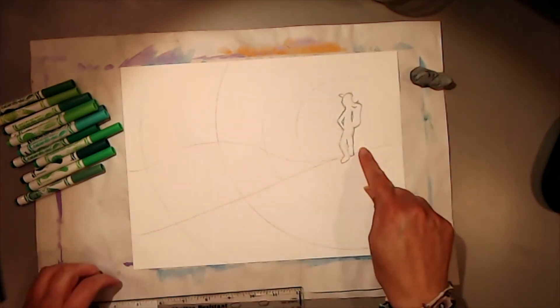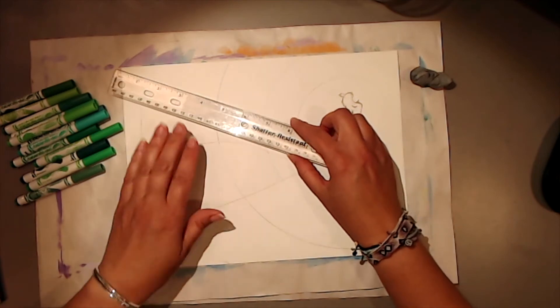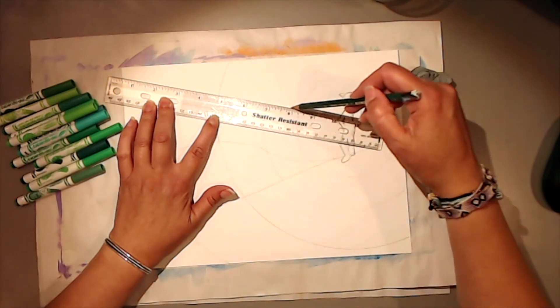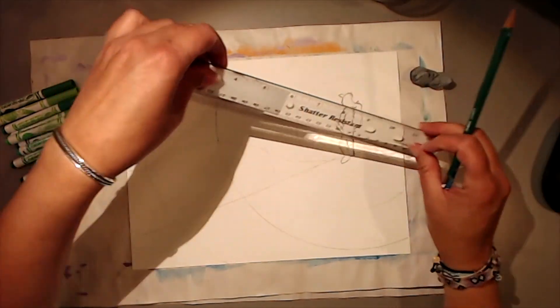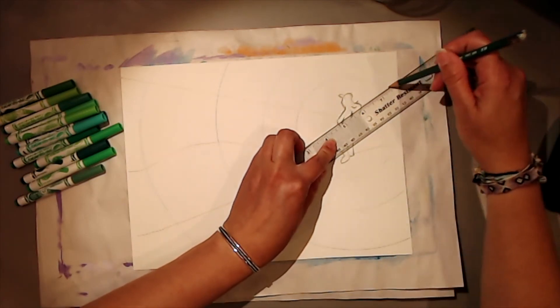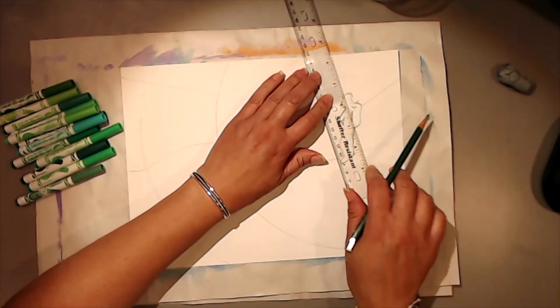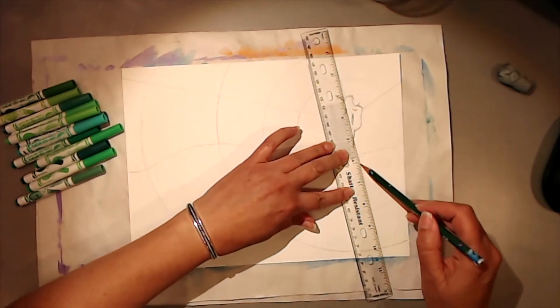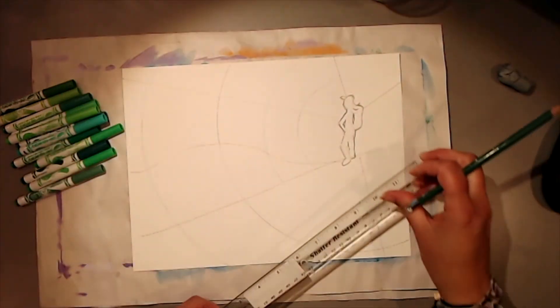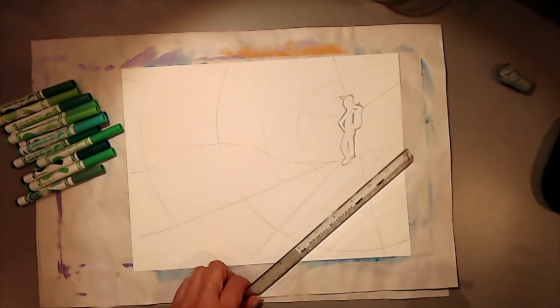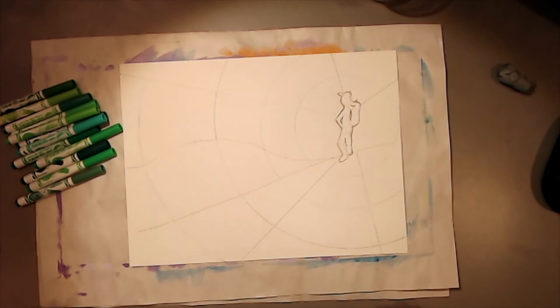Now I've already got one line kind of radiating from the middle. I'm going to put one or two more to break up the space and make it more interesting. And all my lines are going to be coming out from the figure in my drawing. I think I'll make one more here. And now I'm ready to color or paint with whatever medium you want to use.